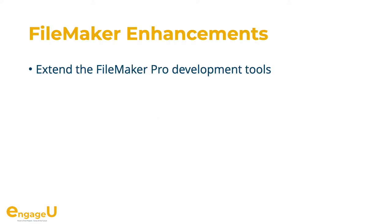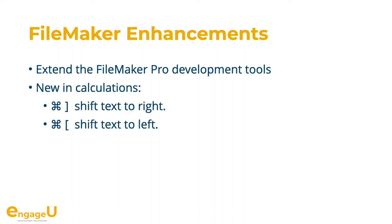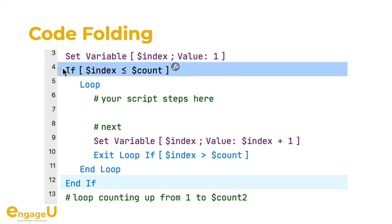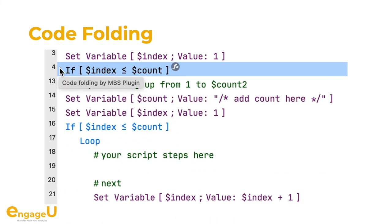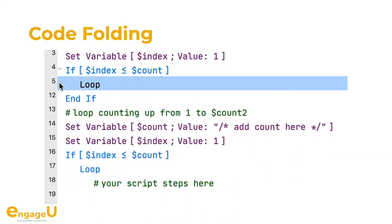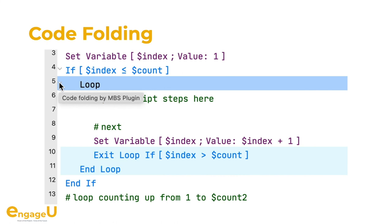We extend the FileMaker user interface with a lot of nice things for developers. Recently we got shortcuts for the calculation dialog to shift text left and right so you can nicely format your let statements. With the colorize script function you can apply our coloring rules to a script text if needed. We also added code folding to the plugin, which may be helpful to debug or read scripts. Note that we only modify the view — when you save or reload the script the lines are all showing again.